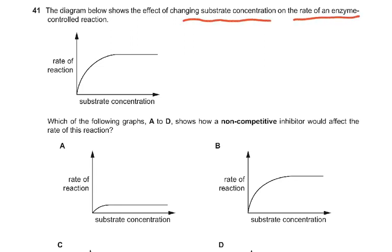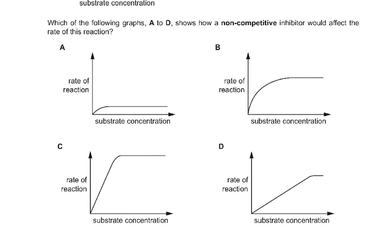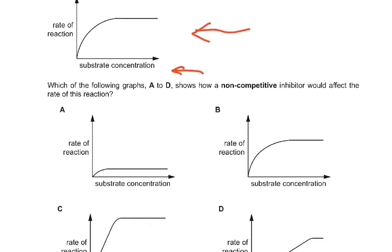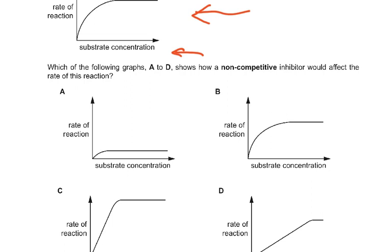Question 41: the diagram shows the effect of changing substrate concentration on the rate of an enzyme-controlled reaction. Which of the graphs A to D shows how a non-competitive inhibitor would affect the rate of this reaction? The answer is A. The non-competitive inhibitor attaches to the enzyme — if you had 100 active sites and 90 are blocked by the non-competitive inhibitor, only 10 active sites remain. That is why the rate of reaction would be slower and would level off much earlier.